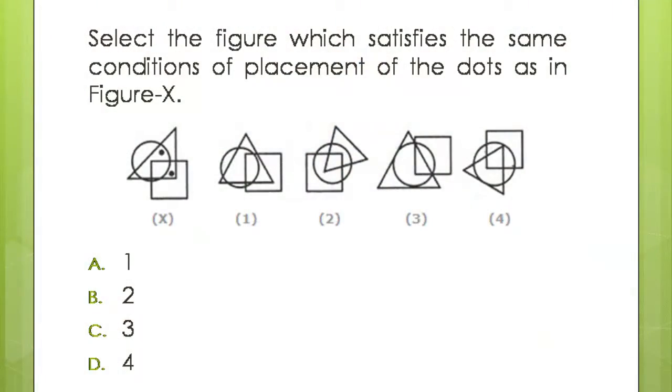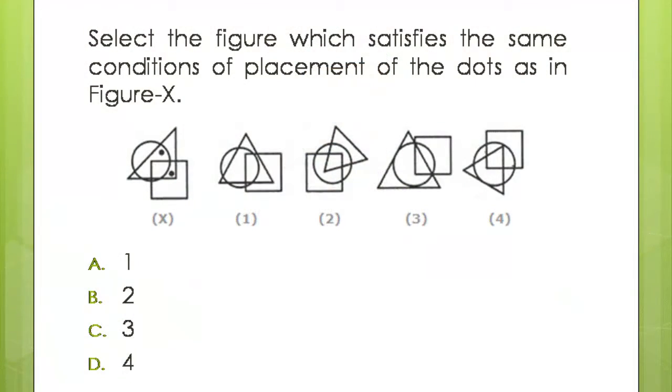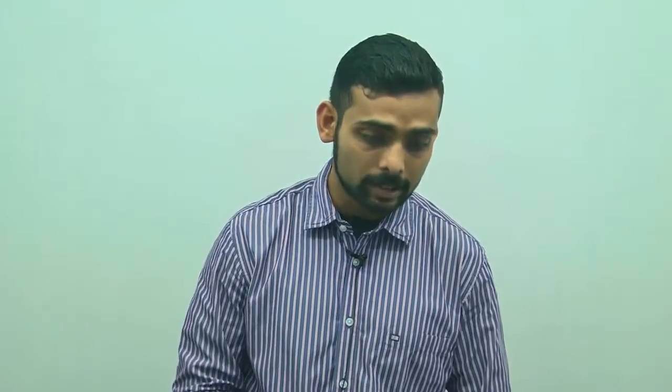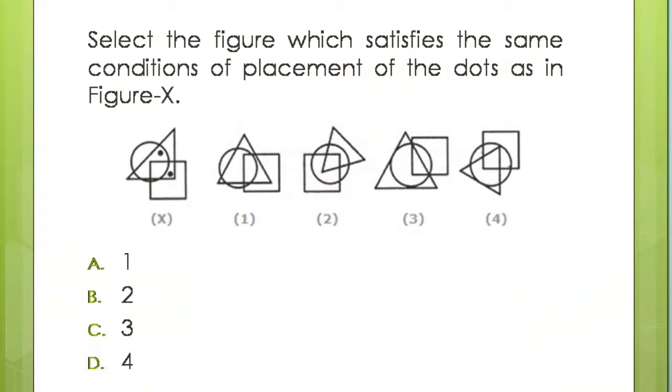If you see the question on your screen, this question has two dots and the conditions are the same. You have to select the figure out of 1, 2, 3 and 4 which satisfies the same conditions of placement of the dots as in figure X. In figure X, there is one dot placed in the area covered only by the triangle and the circle — it does not involve the square. The second dot is placed in the area covered by the triangle and the square, and it does not involve the circle.